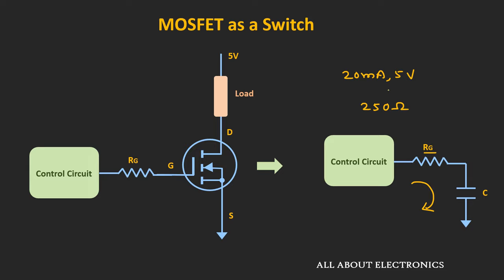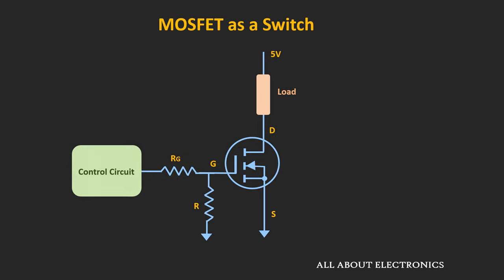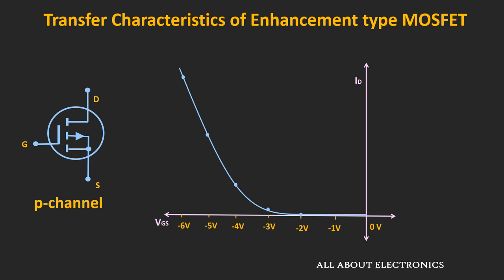Apart from the series resistor, a pulldown resistor is also required at the gate terminal. During the power-up of the control circuit, this pulldown resistor ensures that the MOSFET remains in the default condition — whenever the input is 0, the MOSFET should remain in the OFF condition. Similarly, let's talk about the P-type MOSFET and see how it can be used as a switch.